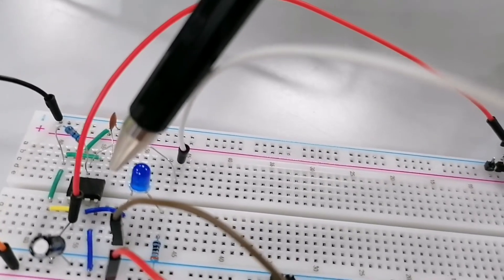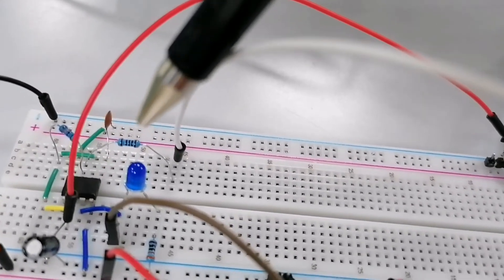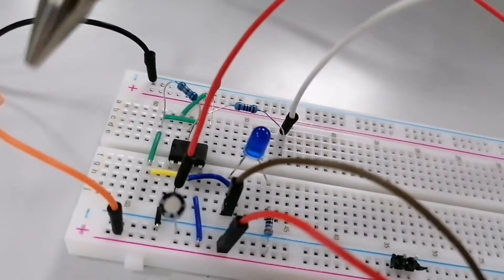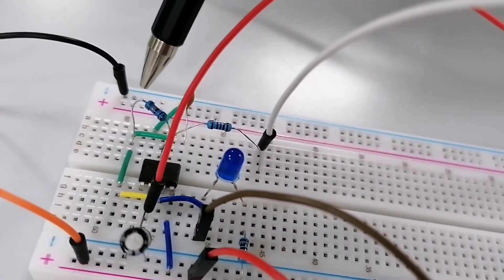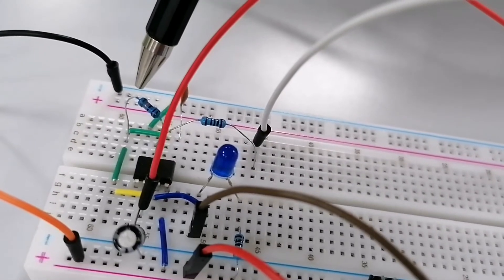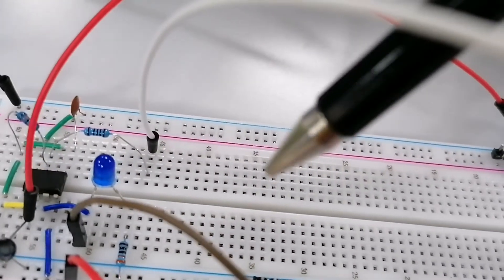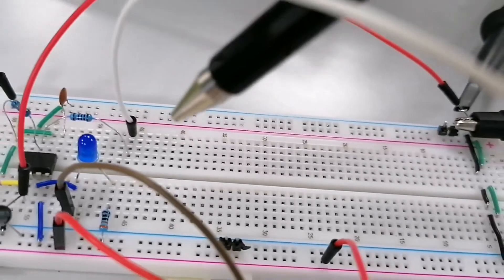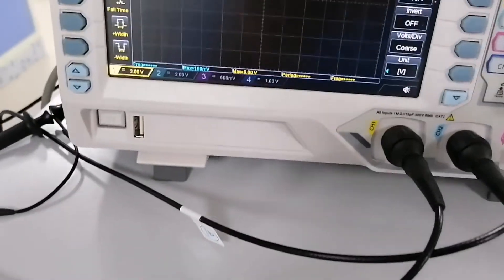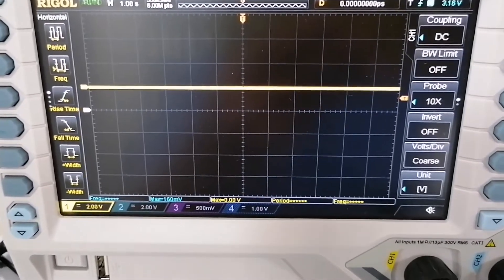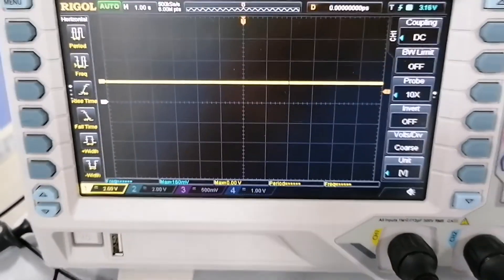The 555IC is configured as an unstable multivibrator. The power plus and minus already connected to the circuit. And as you can see, there is no oscillation yet. In the oscilloscope, there is no oscillation yet.